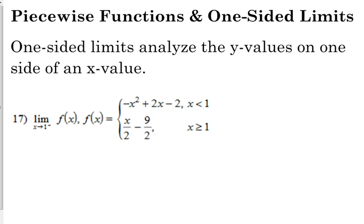They also like piecewise functions on the final exam. One-sided limits analyze a value on one side of an x value — either you're approaching the x value from the left or from the right. In number 17, the limit as x approaches one with a little negative superscript — that negative after the one means from the left.